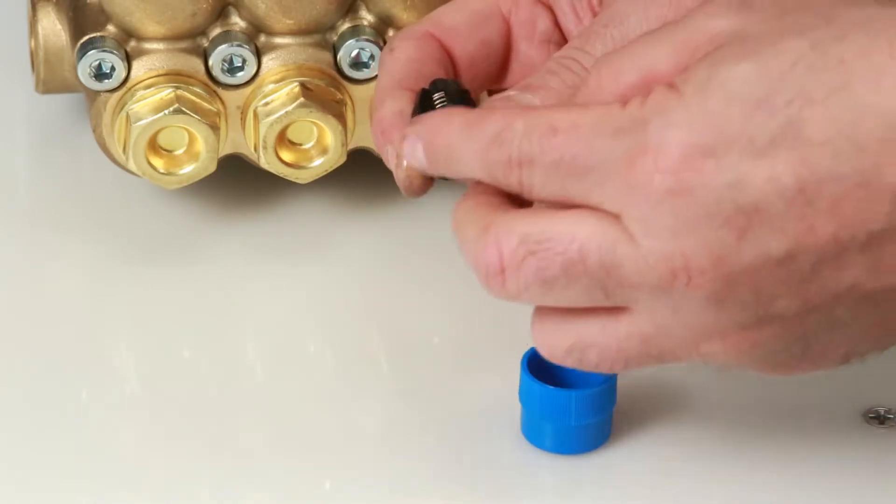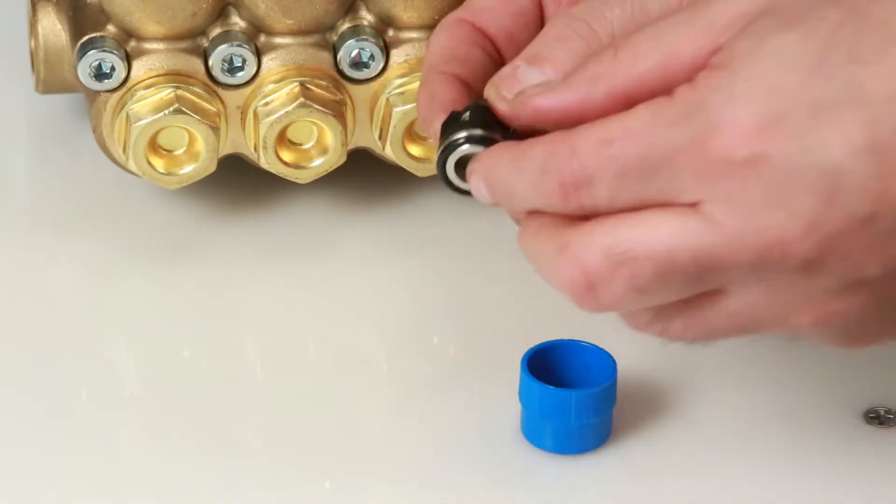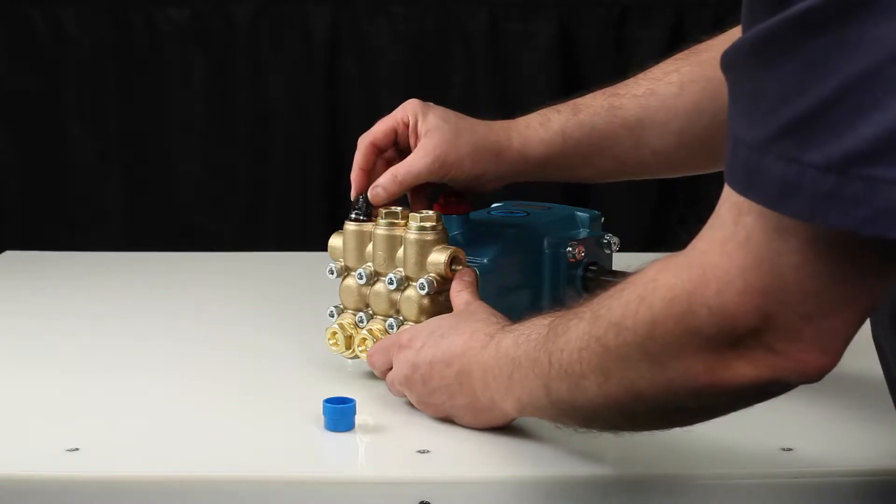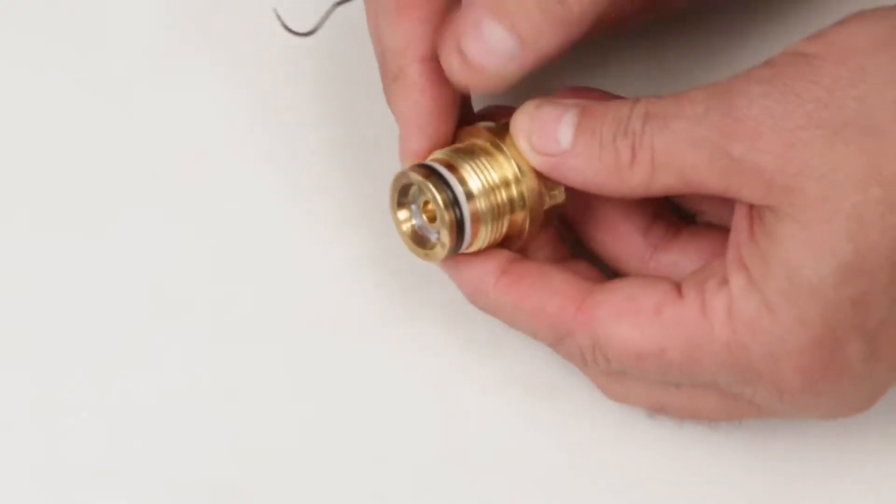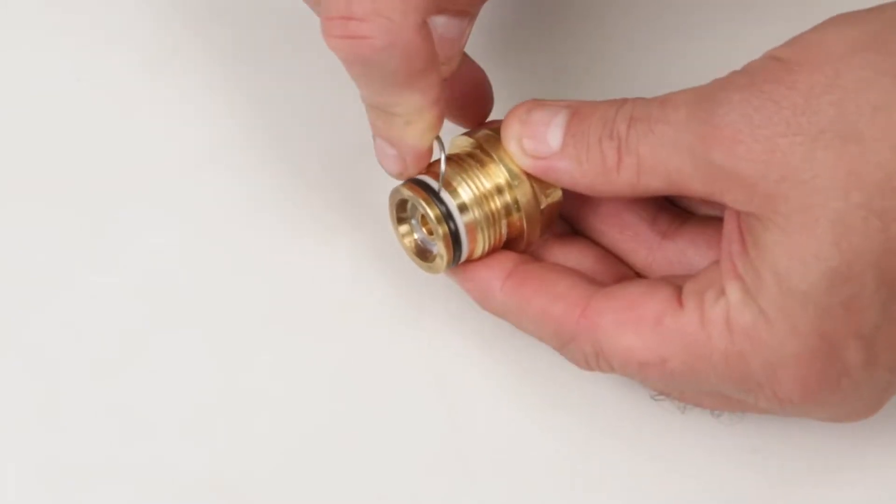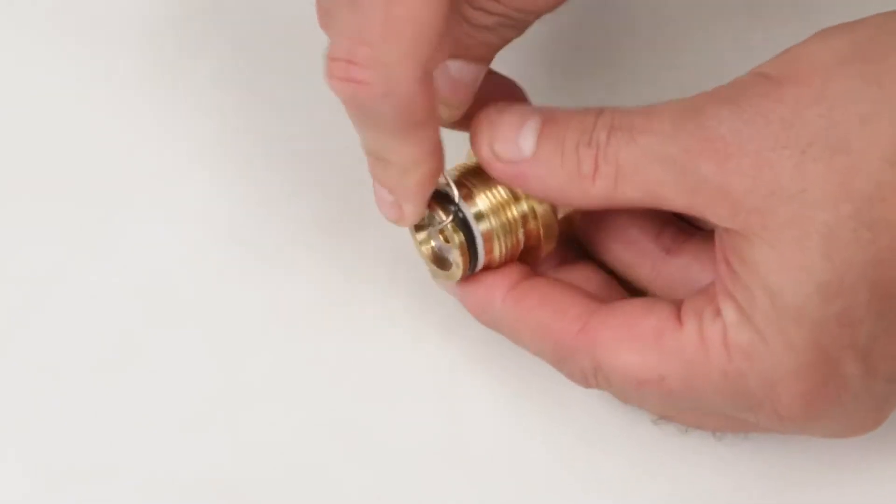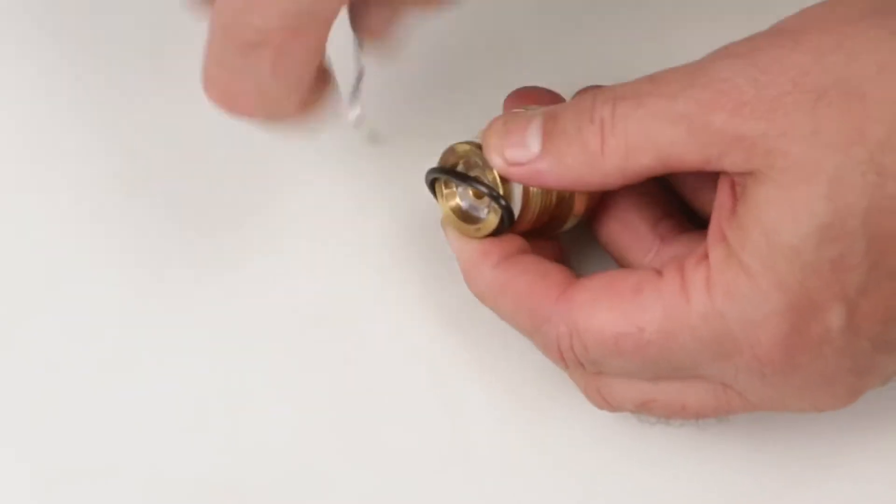Before installing the new valve assembly, lubricate O-ring on valve seat. Next, insert valve assembly into manifold and press into place. Before reinstalling the valve plug, using a small screwdriver or pick, replace the O-ring and backup ring provided in the valve kit.